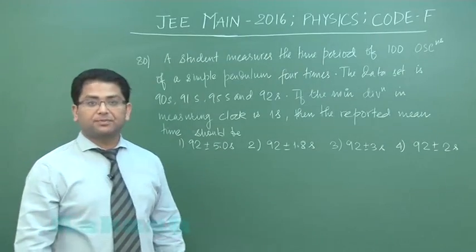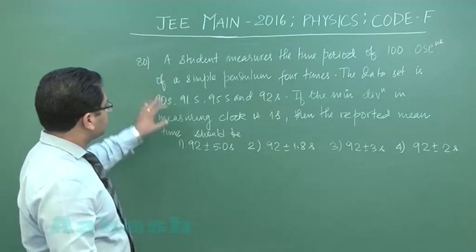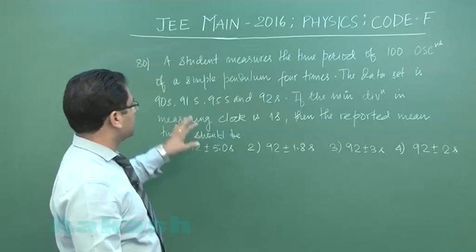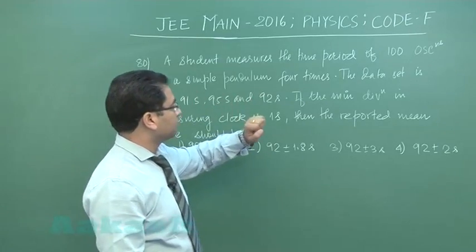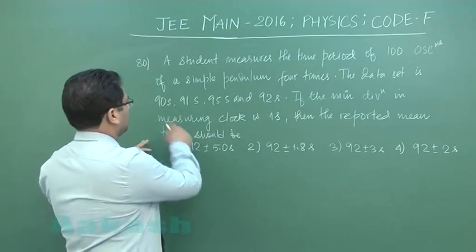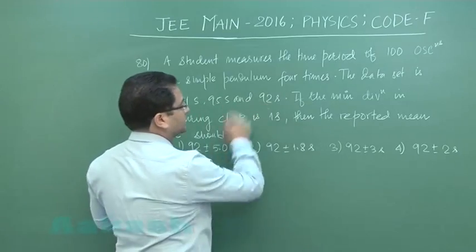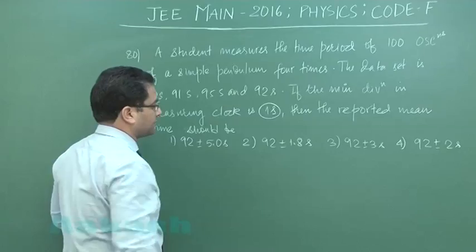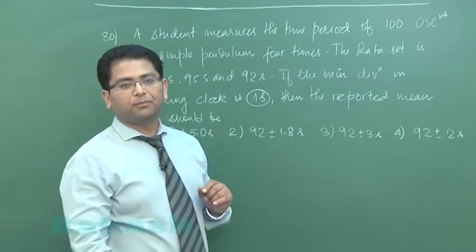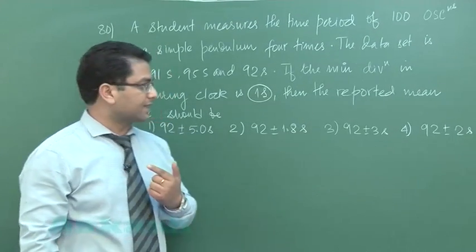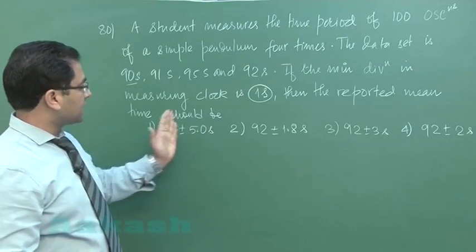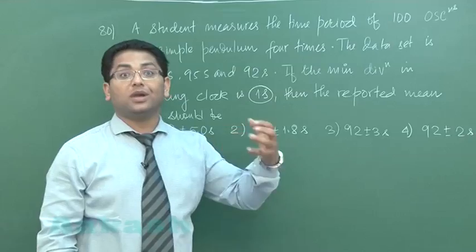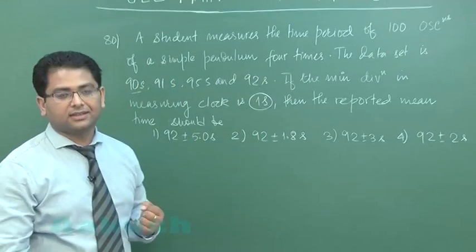Question number 80 is from experimental physics. A student measures the time period of 100 oscillations of a simple pendulum four times, and the measured values are given. If the minimum division in the measuring clock is one second, that means the least count is one second, then the reported mean time should be calculated.